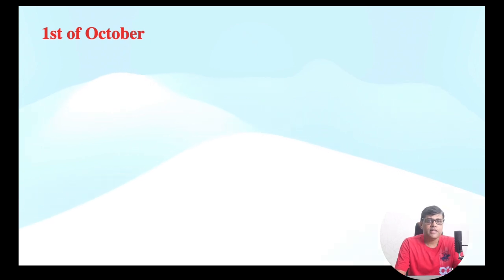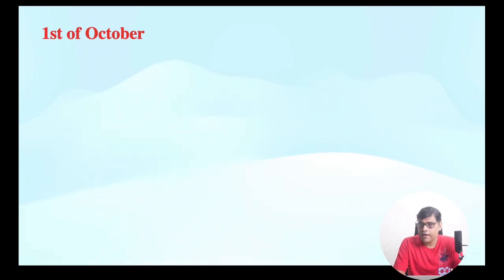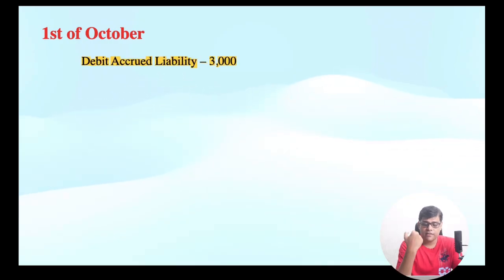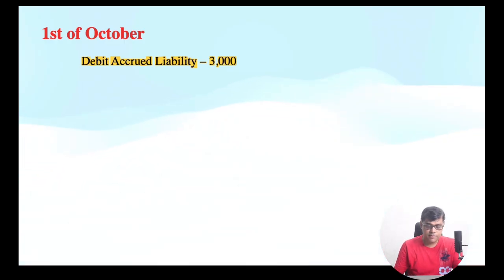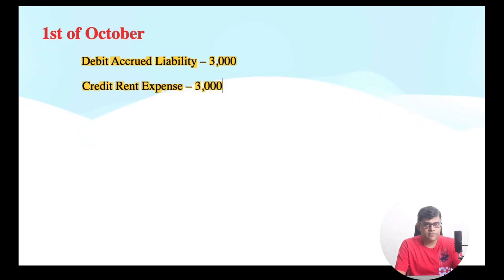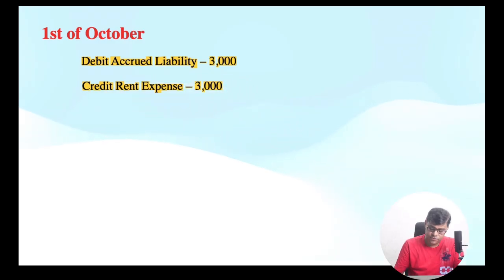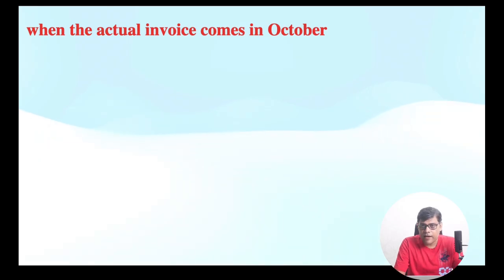Step 2: on the 1st of October, or at the beginning of the subsequent month, the entry we posted last month needs to be reversed in the system, because we have not actually received the invoice yet. The accounting entry here will be: debit accrued liability and credit rent expense — because the rent which was debited earlier is now going to be credited. This is a temporary adjustment that clears whatever we posted last time. This is Step 2.